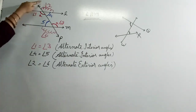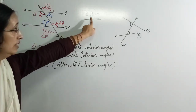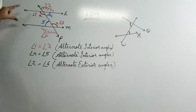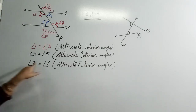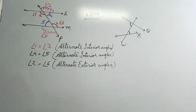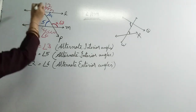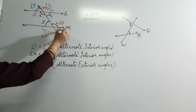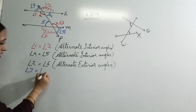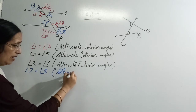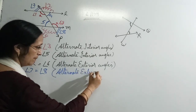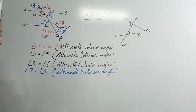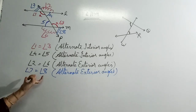Alternate exterior angles equal तभी होंगे जब L is parallel to M. अगर lines parallel नहीं हैं, तो alternate exterior angles भी equal नहीं होंगे. एक और pair of alternate exterior angles बन रहा है — if I take it as angle 7 and angle 8, तो angle 7 will be equal to angle 8. यह alternate exterior angles हैं, and same condition — they are equal only when these two lines are parallel. अगर lines parallel नहीं हैं, तो angles will not be equal.